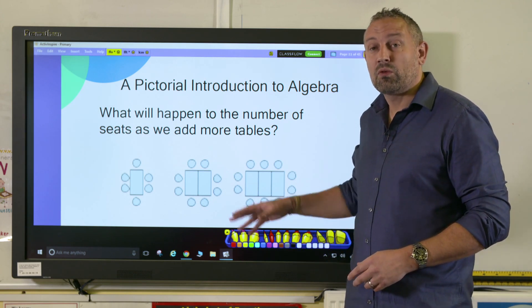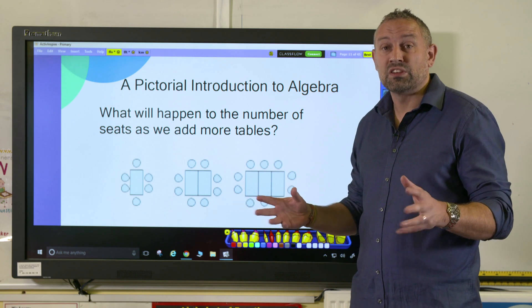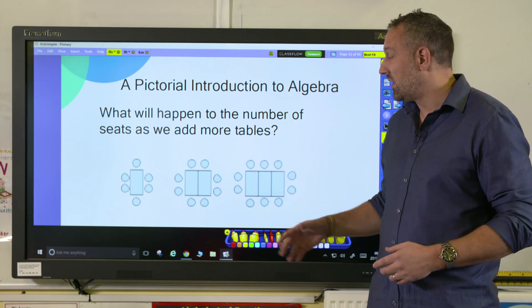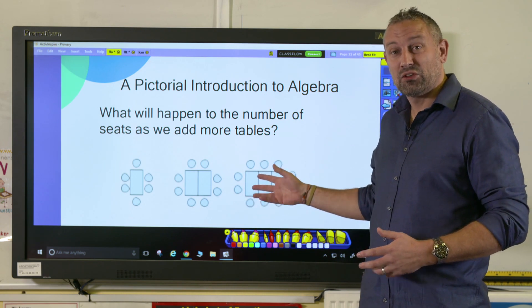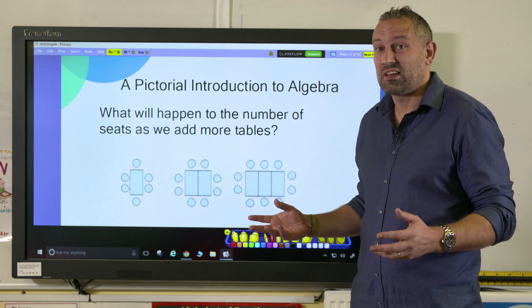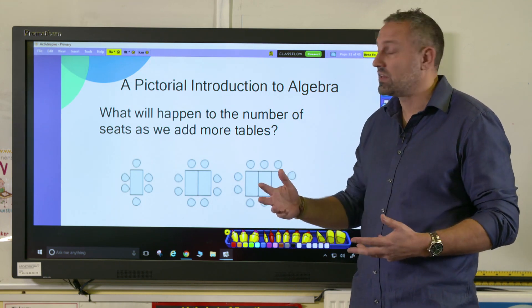In a previous video we've talked about making generalizations and statements to try and build up children's confidence with algebra. A really good statement would be: do the children recognize that when more tables are added, more seats are added? That's a really simple statement—they can see that something is increasing.